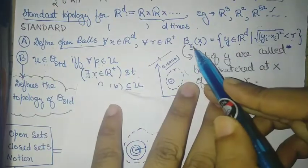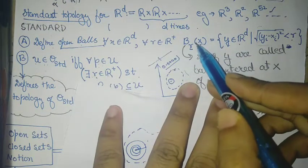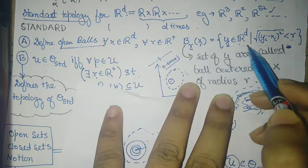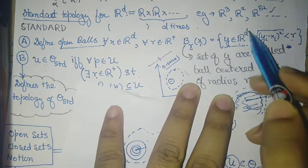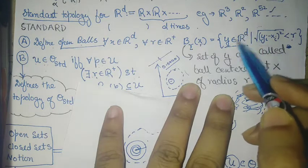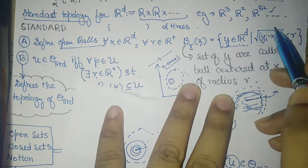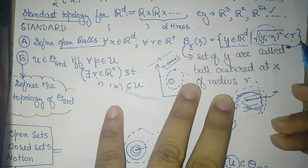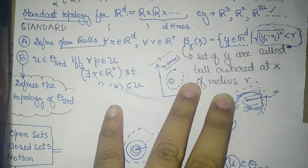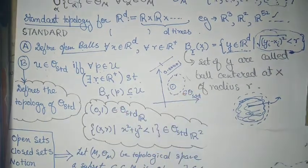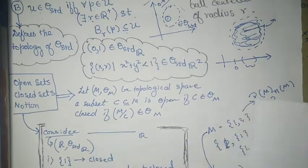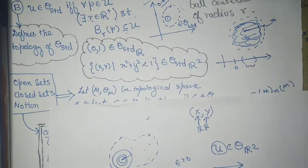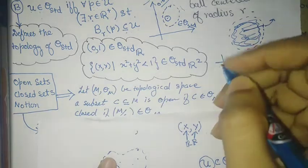The open ball by definition, centered around a point x, is the collection of all elements belonging to R^d such that they satisfy a particular distance condition. This defines what the standard topology is.